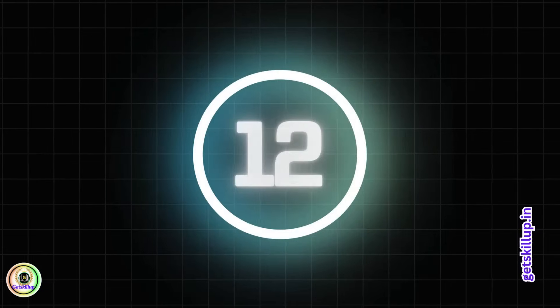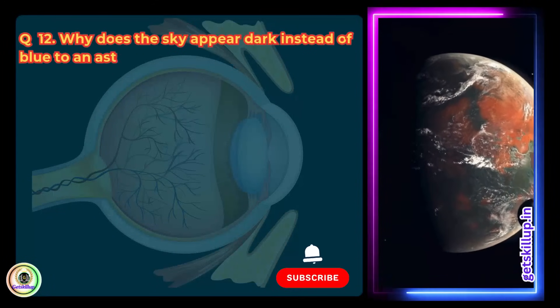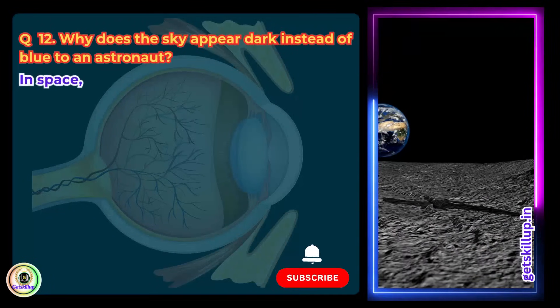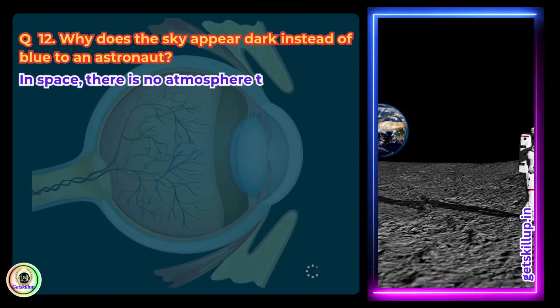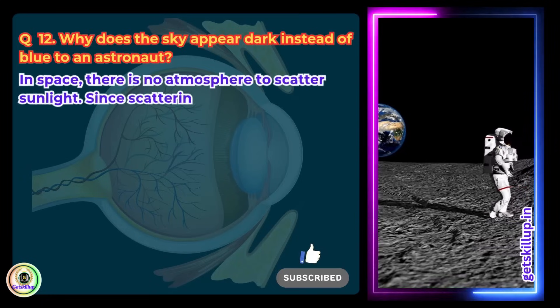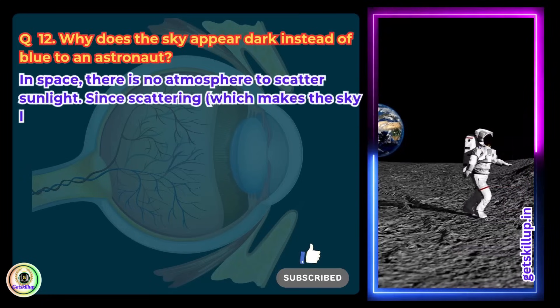Question 12. Why does the sky appear dark instead of blue to an astronaut? Answer: In space, there is no atmosphere to scatter sunlight. Since scattering, which makes the sky look blue, does not happen, the sky appears black to an astronaut.